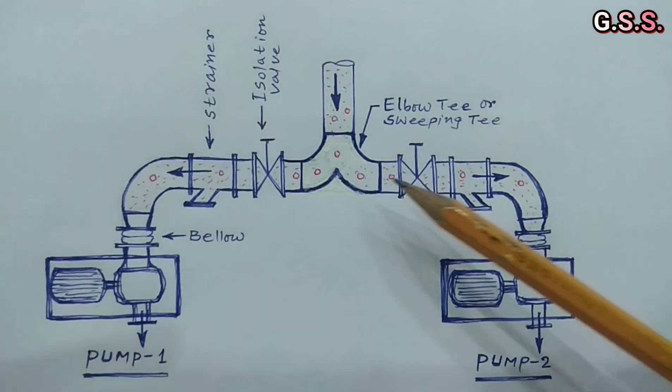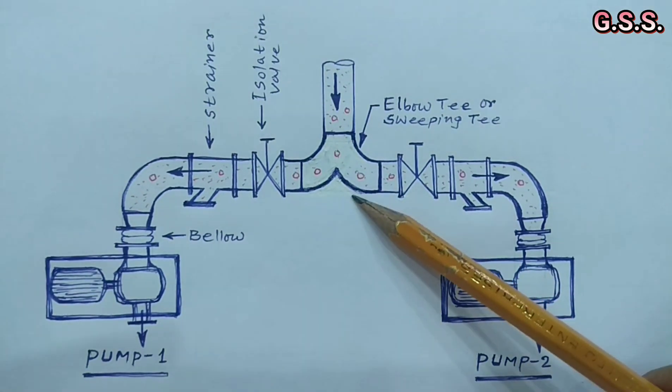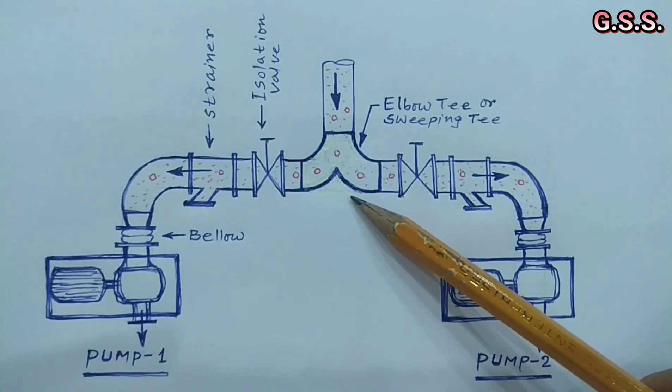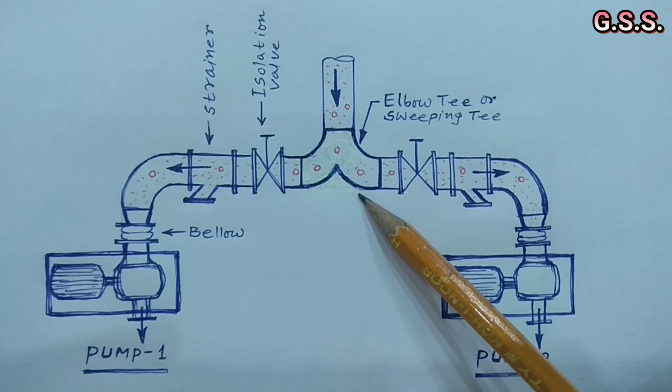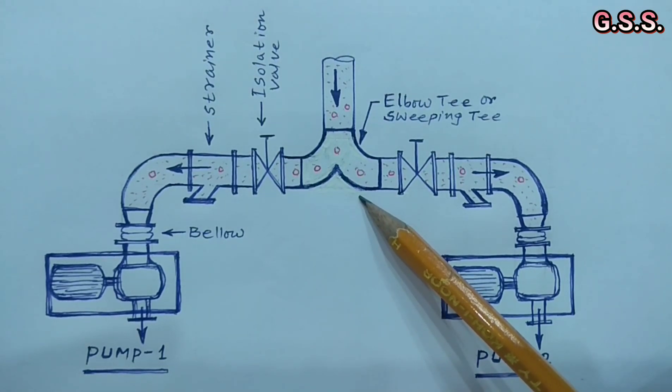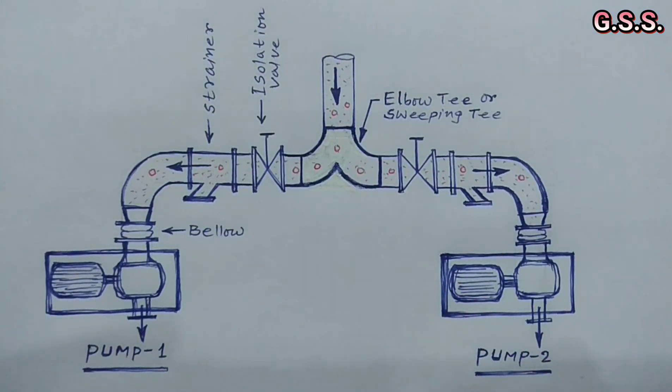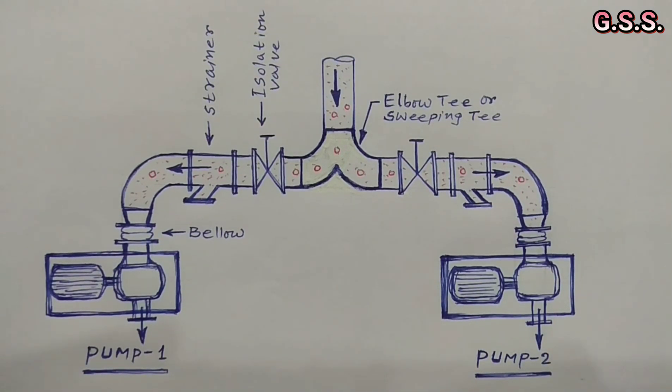This type of elbow T or sweeping T is very much useful for cryogenic pump suction line where lot of vapor is generated due to heating of metal piping.